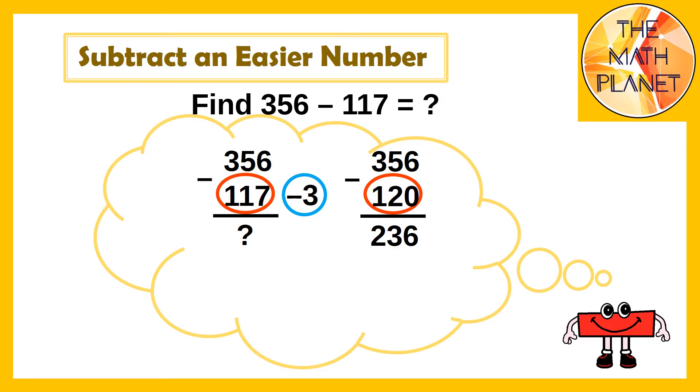Then I need to compensate for the extra 3 that I subtracted. So I'll add 3 to the answer that I got. And the difference will be 356 minus 117 equals 239.